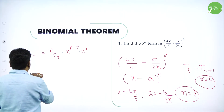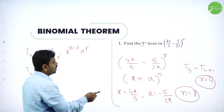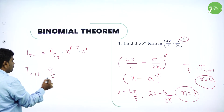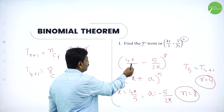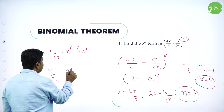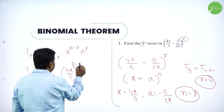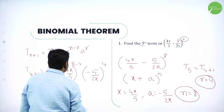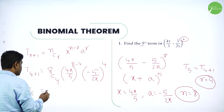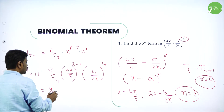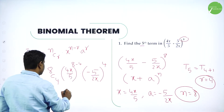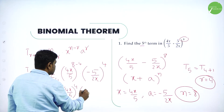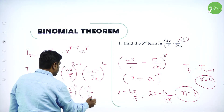Use the formula T(r+1) equals nCr times x power n minus r times a power r. T5 equals T(4+1): n is 8 so we write 8C4, times 4x by 5 power 8 minus 4, times minus 5 by 2x power 4. That gives 8C4 times 4x by 5 power 4 times minus 5 by 2x power 4. Since minus is raised to an even power 4, it becomes positive.